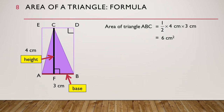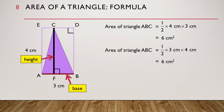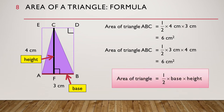We have found the area of triangle ABC. We can move the numbers around and still get the same answer. Now that we know that AB is the base of the triangle and CF is the height of the triangle, we can write the area of a triangle as being equal to half times base times height.